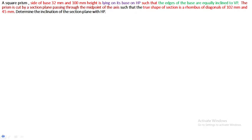I've discussed five problems in the previous cases. Every problem they said what is the section plane inclination. Here they never mentioned anything related to section plane inclination. Instead of that, they gave what is the true shape - a rhombus of diagonal 102 and 45 mm respectively. So based on this concept we have to proceed.